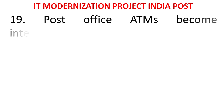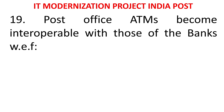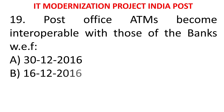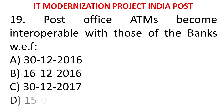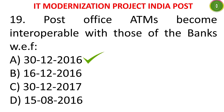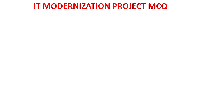MCQ 18: Post office ATMs became interoperable with those of the banks with effect from - A) 13-12-2016, B) 16-12-2016, C) 30-12-2017, D) 15-8-2016. Interoperability means you can do withdrawals from bank ATMs using post office accounts and vice versa. The answer is 30-12-2016. Interoperability of ATMs started in December 2016 - the 30th of December 2016.